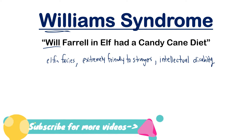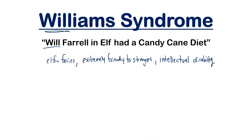Those are three really important features you can get just from the First Aid mnemonic, but I want to go a step further. Will Ferrell in Elf had a candy cane diet — there was a scene in the movie where he talks about all the food groups revolving around candy. I'm going to use just 'candy cane' here. If you draw a candy cane, notice how it resembles the number seven. This tells us that Williams syndrome is due to a microdeletion of chromosome 7.